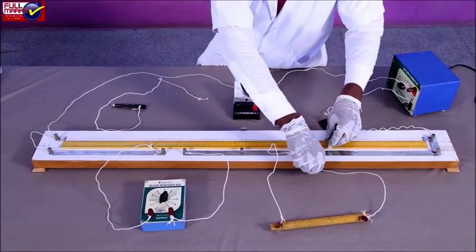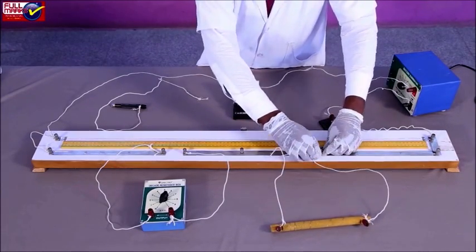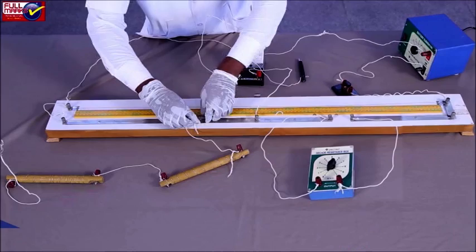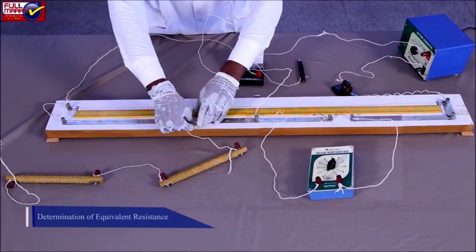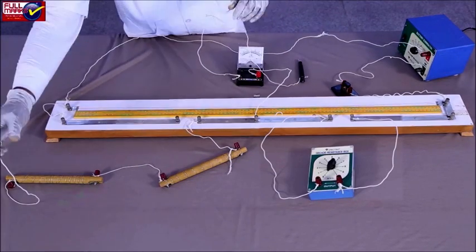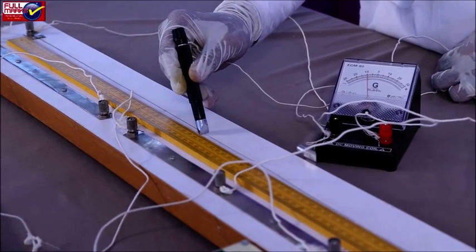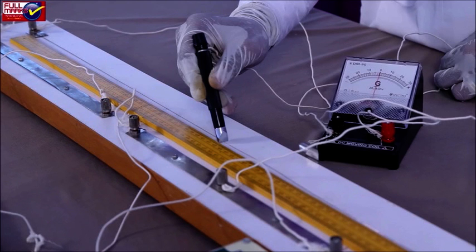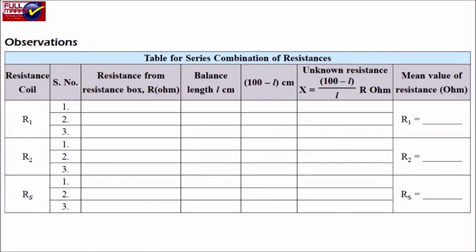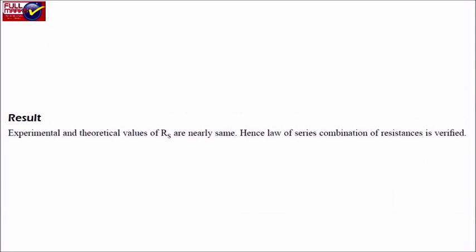Similarly, determine the resistance R2 and note the observations. For determination of equivalent resistance, connect the series combination of R1 and R2 in place of unknown resistance X in the gap of the meter bridge and proceed to obtain the balance point. Take at least three observations. Result: the experimental and theoretical values of Rs are nearly the same; hence, the law of series combination of resistance is verified.